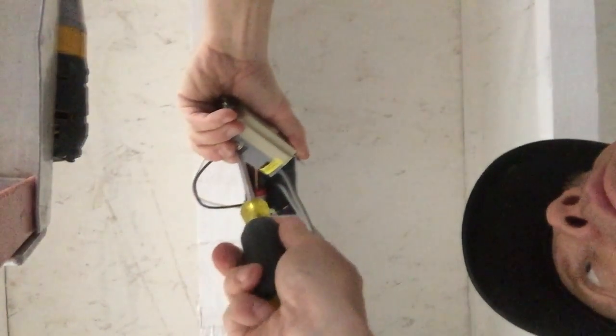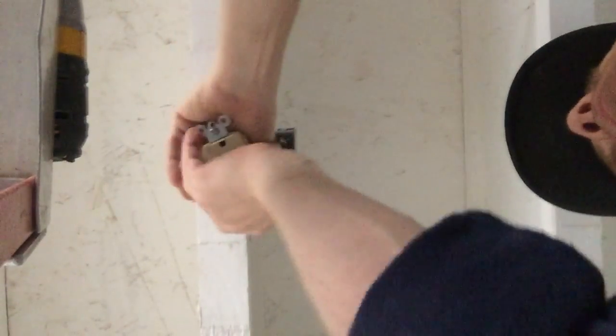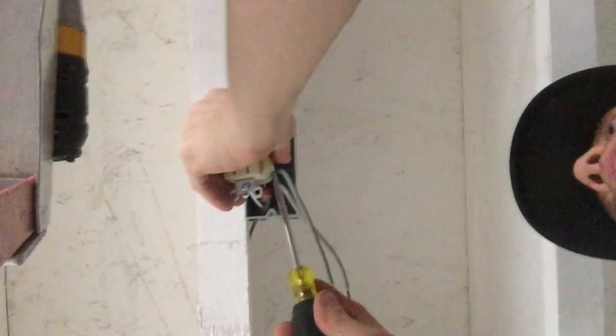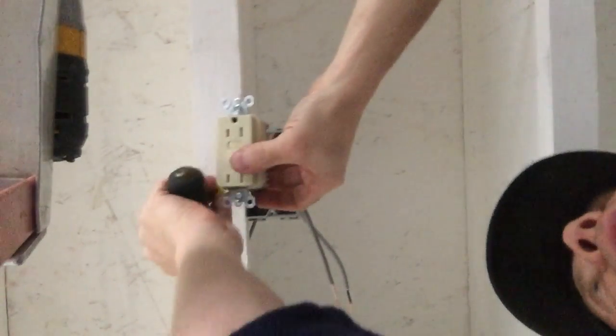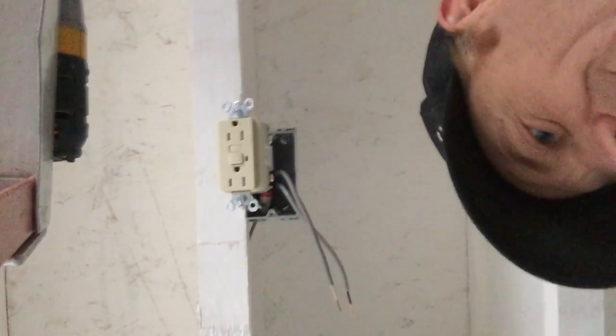So take the line, hook the hot to the copper colored screws, the ones on the right hand side, and hook the neutral to the line side silver screw.